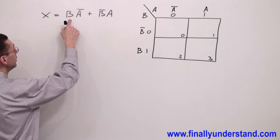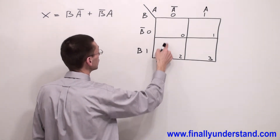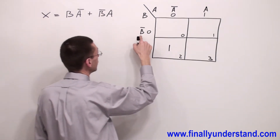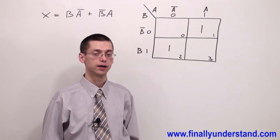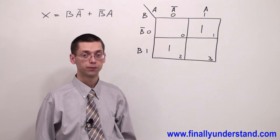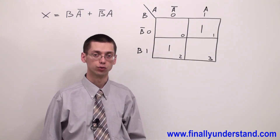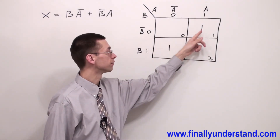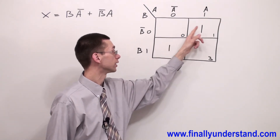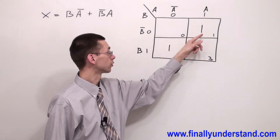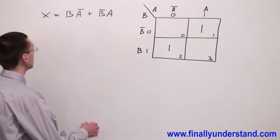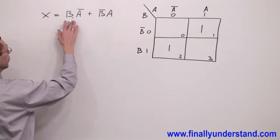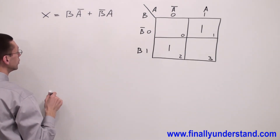Let's take a look at this expression and try to put the ones in the proper cells. I have BA-not and B-not A. BA-not goes in this cell, and B-not A goes in this cell. Please keep in mind that anytime we talk about the two-variable Karnaugh map, we can group ones in groups of one, two, and four. We're supposed to group them horizontally or vertically, but never diagonally — meaning we cannot create a group of these two ones because we don't create groups diagonally.